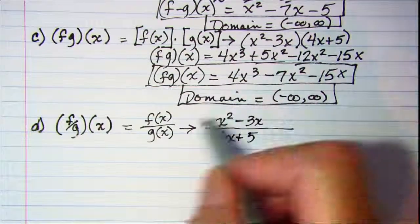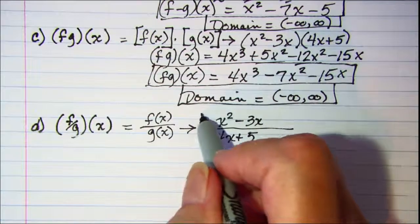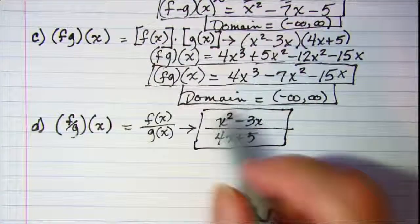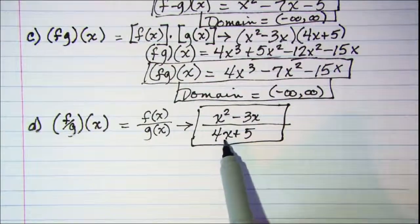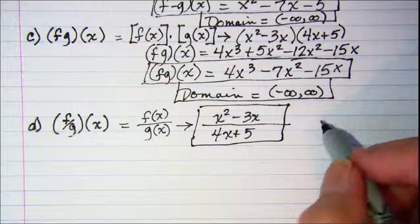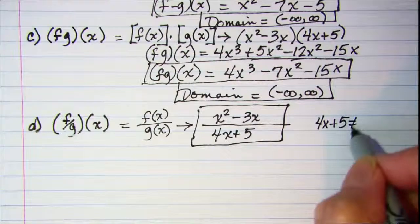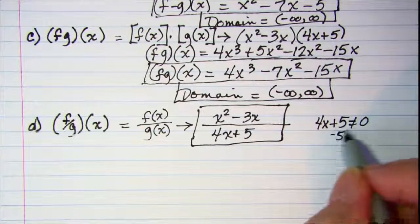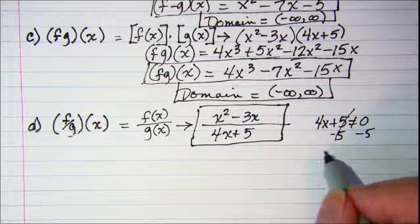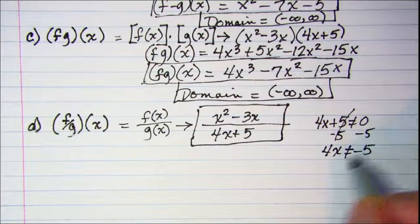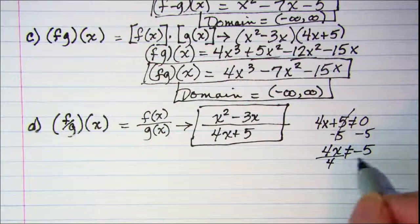No simplifying can be done here but we need to designate that 4x plus 5 cannot equal 0. So subtract 5 from both sides. So 4x cannot equal negative 5. Divide both sides by 4.